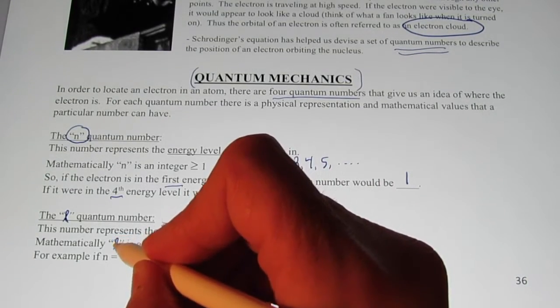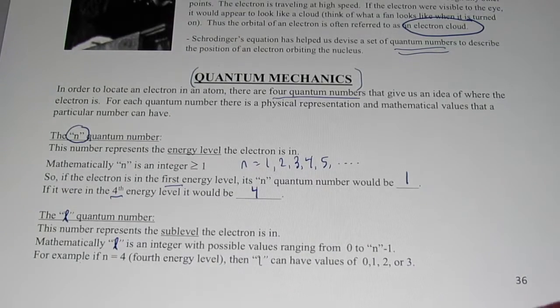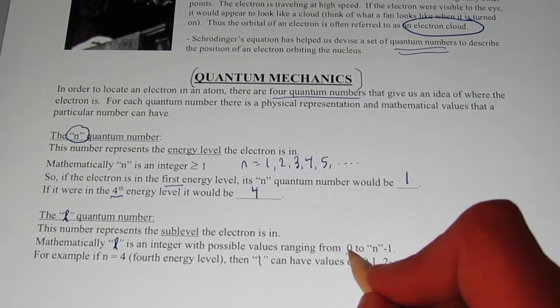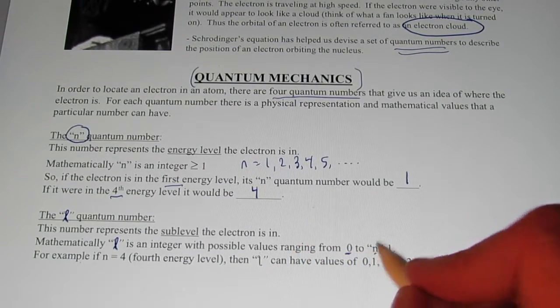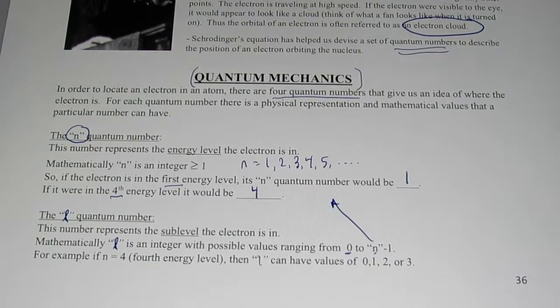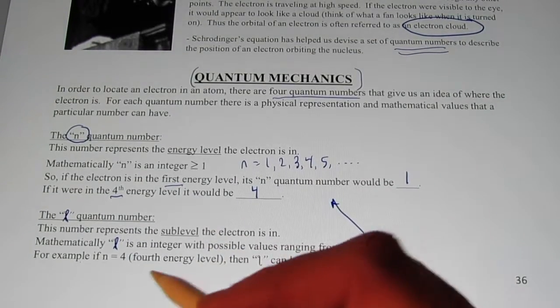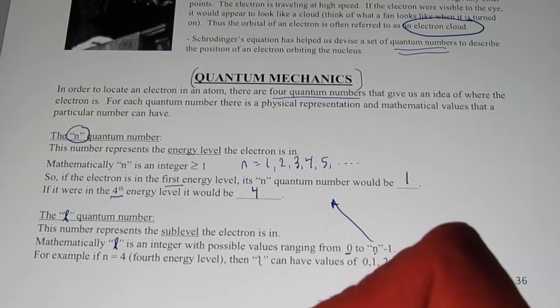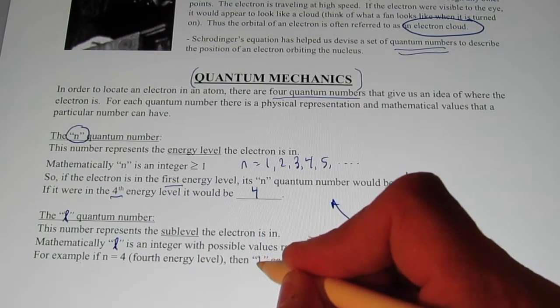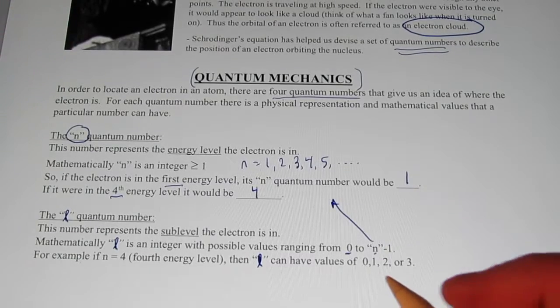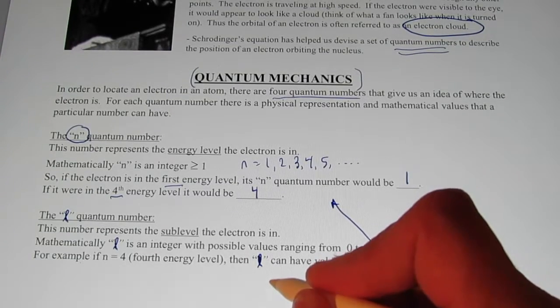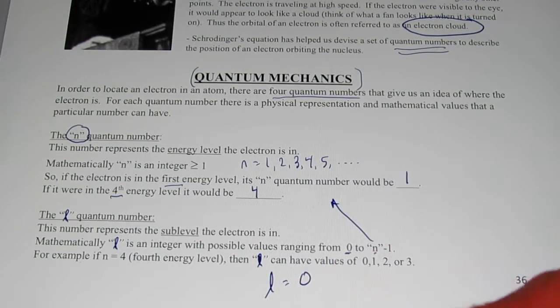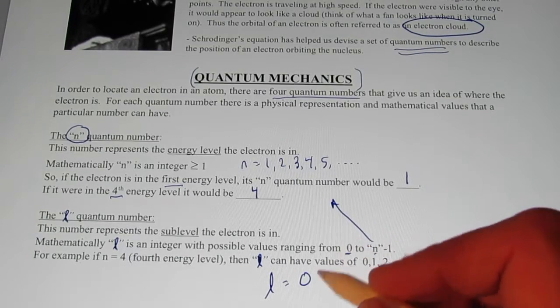Mathematically, L is an integer again. Its values range from zero all the way up to n, the energy level, minus one. For example, if I had an electron in the fourth energy level, L can have four values. L can be zero, right? Because it always starts with zero.